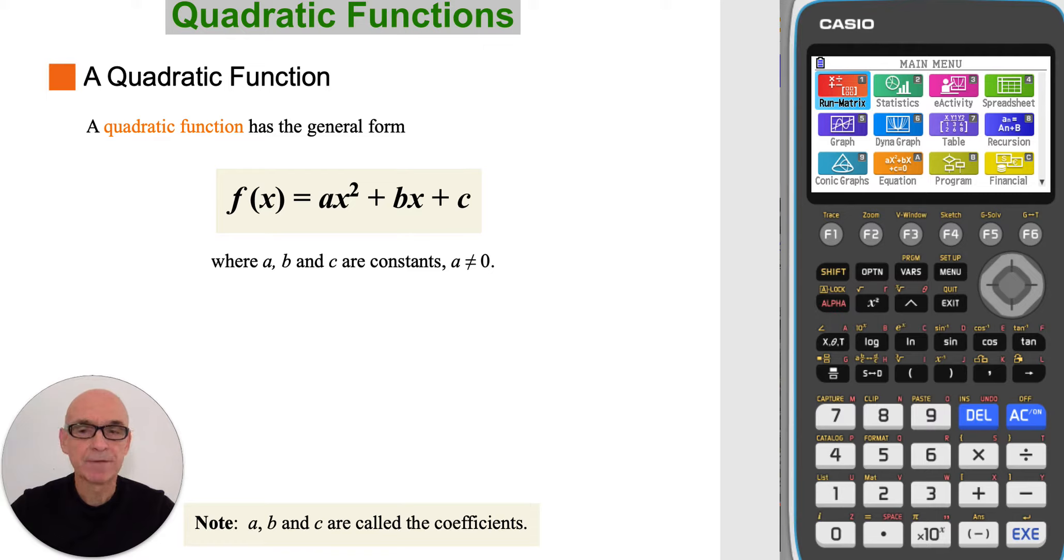A quadratic function has the general form f of x is equal to ax squared plus bx plus c, where a, b and c are constants, called coefficients.